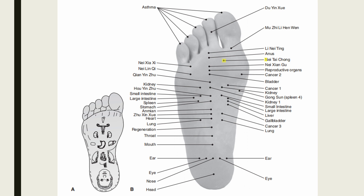Nae Tai Chong is located opposite Liver 3 (Taichong) on the bottom of the foot. Indications include inflammation of the testes, herniation, abnormal uterine bleeding, irregular menses, dysmenorrhea, hepatitis, eye problems, and high blood pressure.